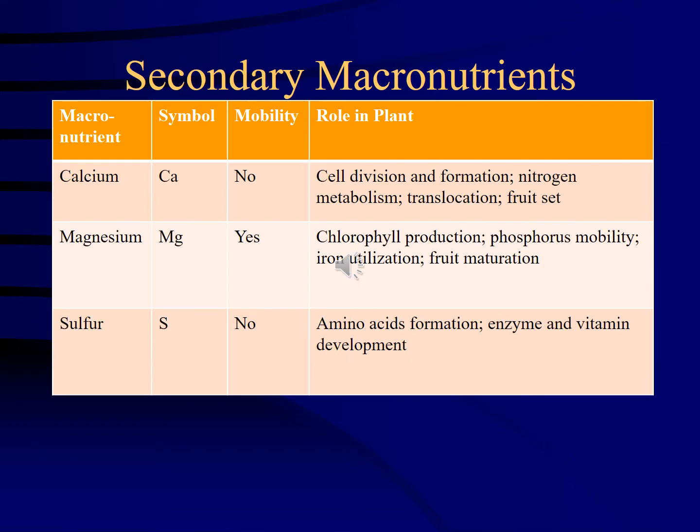A similar list of the secondary macronutrients — calcium, magnesium, and sulfur — shows that magnesium is mobile, but calcium and sulfur are not. So calcium deficiency would not show up as yellowing or discoloring in the older leaves; you would see it in the newer leaves instead.